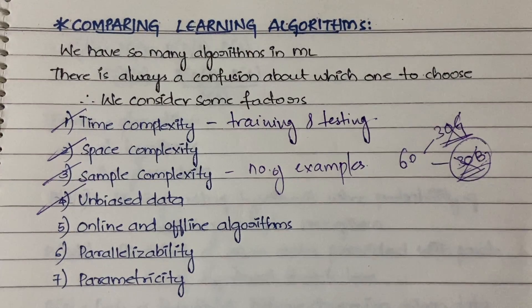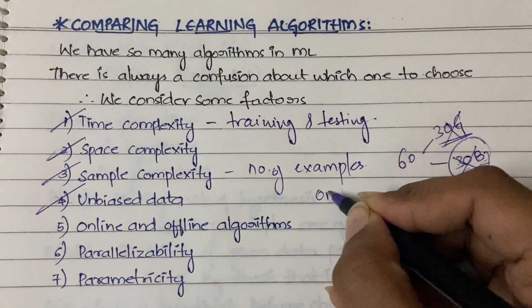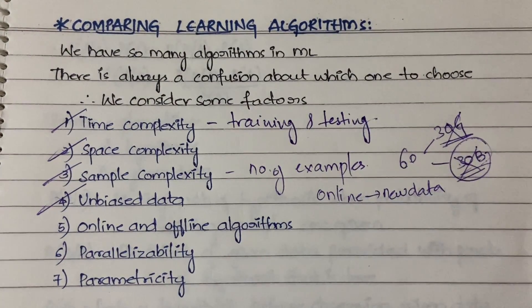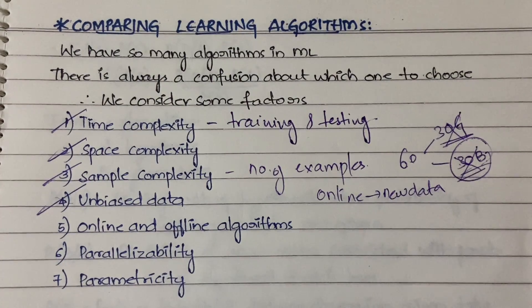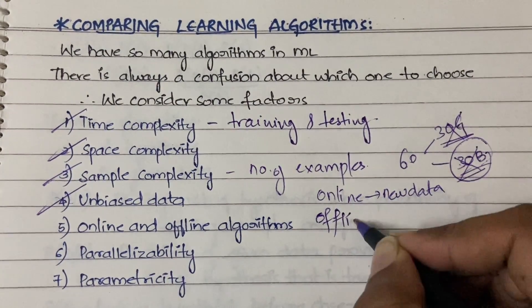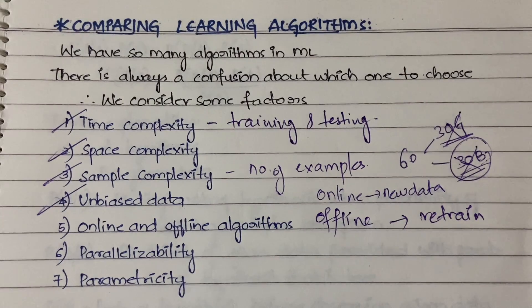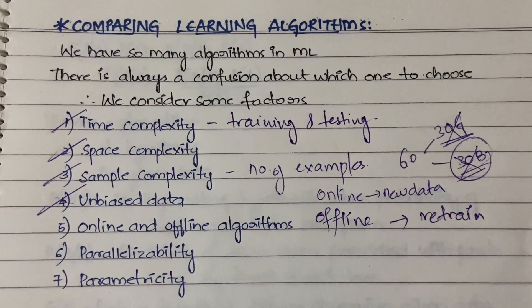Next are online and offline algorithms. Online means if new data is coming and the machine is already trained, the new data is automatically updated and added whenever it arrives. In offline algorithms, the data is not updated automatically — you need to retrain the entire machine with existing examples plus new examples combined. So obviously online algorithms are better because whenever new data is coming it is automatically trained.